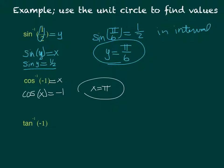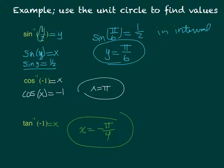For inverse tangent of negative 1, tangent is sine over cosine, so we need equal-magnitude values. The candidates are pi over 4 and negative pi over 4. At negative pi over 4 the tangent is negative, and at pi over 4 it's positive. So inverse tangent of negative 1 equals negative pi over 4.